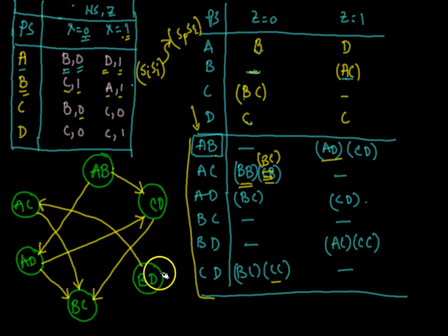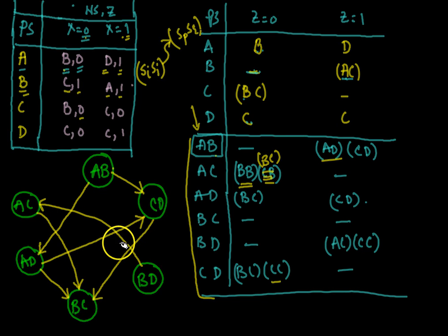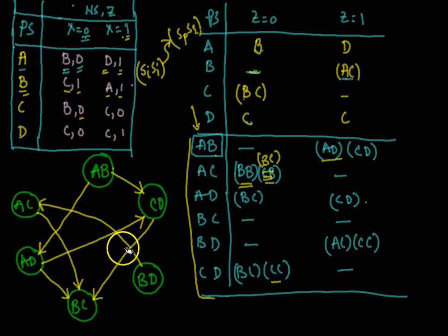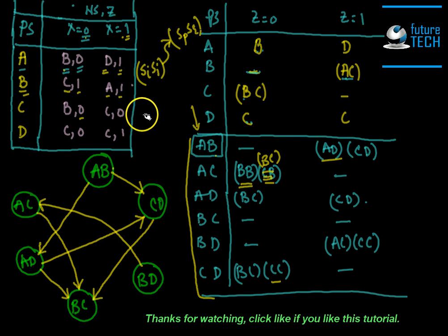Now we check whether this testing graph contains any loop. If it contains a loop, the given machine is not a finite output memory machine; otherwise it is. We observe that this testing graph does not contain any loop, so the given machine is indeed a finite output memory machine.